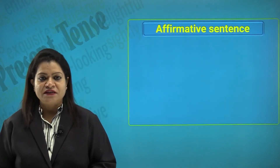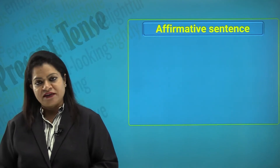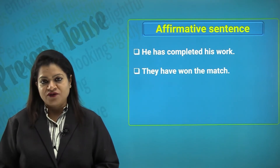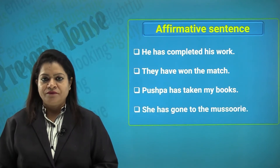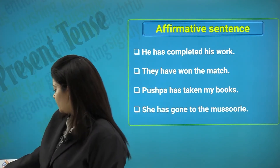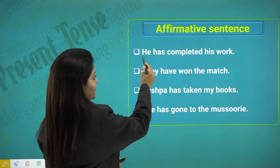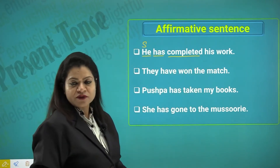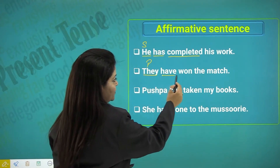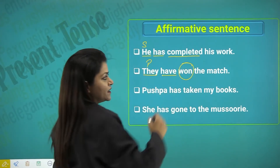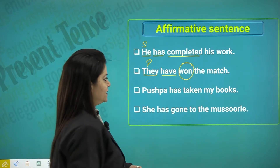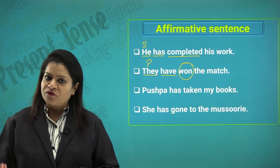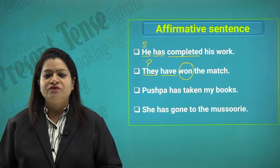Affirmative sentences in the present perfect tense: 'He has completed his work,' 'They have won the match,' 'Pushpa has taken my books,' 'She has gone to Missouri.' Notice that with singular subjects we use 'has,' and with plural subjects like 'they' we use 'have,' followed by the past participle (third form of the verb). This describes an action which has just finished before we do something else.